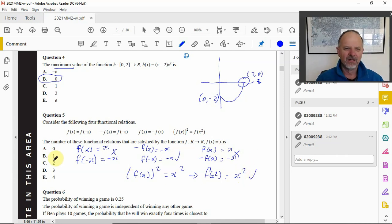So the number of those relations, these relationships that this f(x) = x satisfies, is two of them.